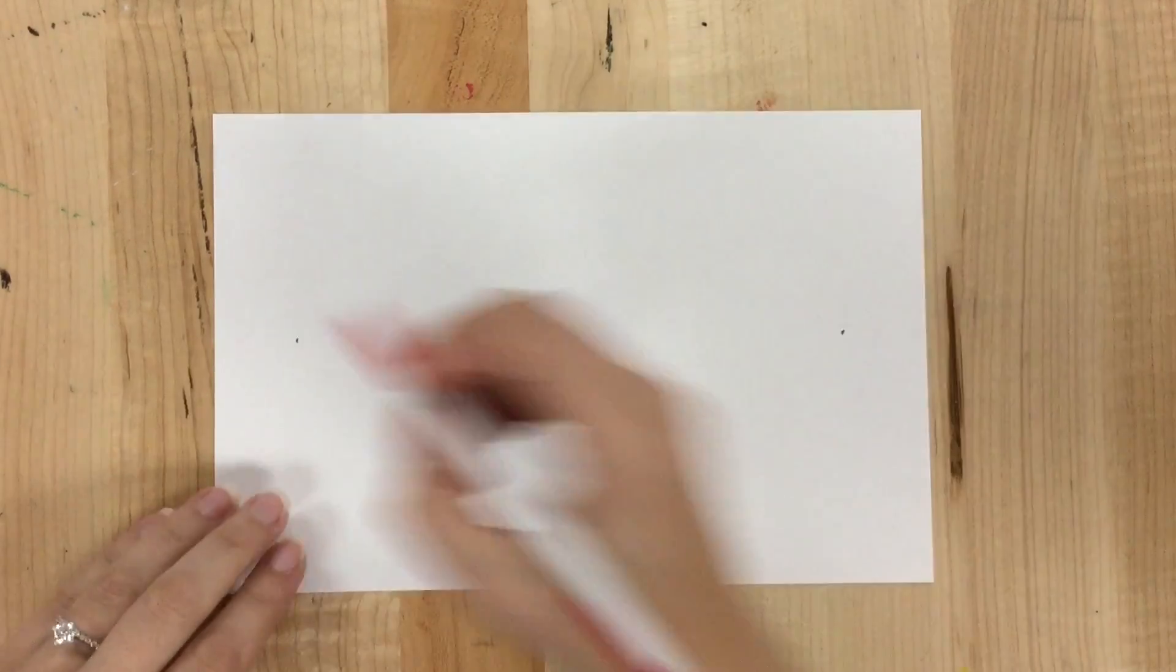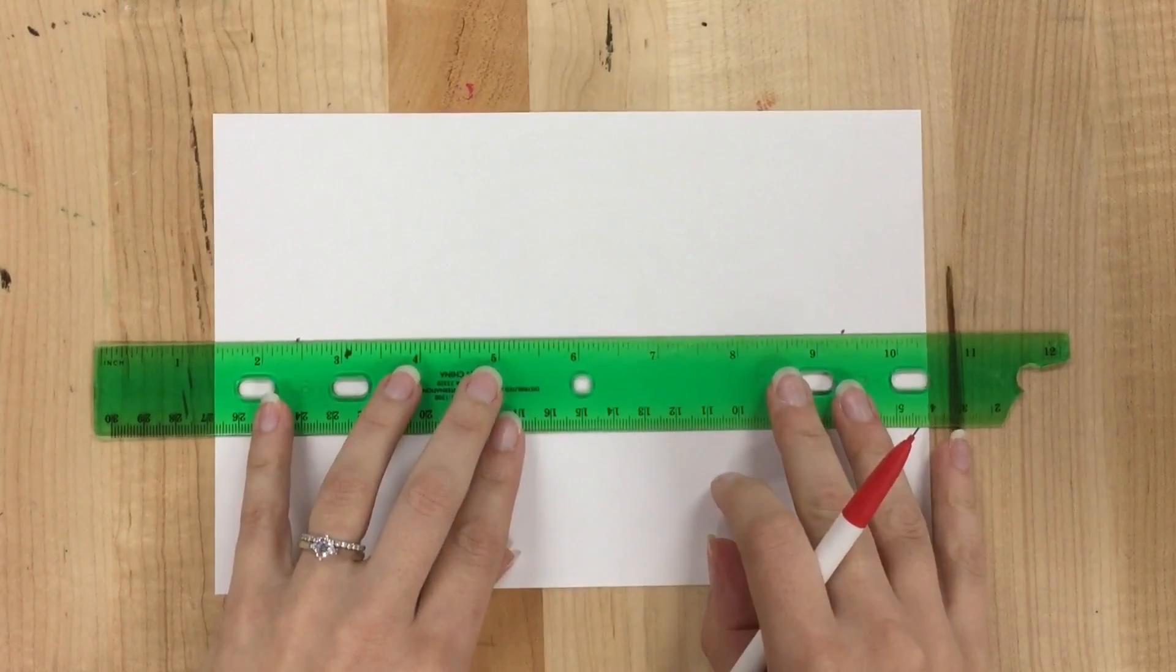When I'm first practicing, I'll usually put them pretty much in the same plane. I could draw my horizon line through them.